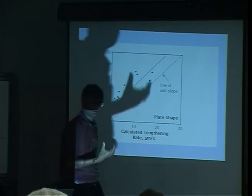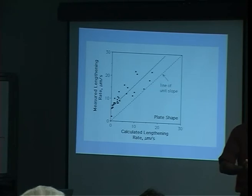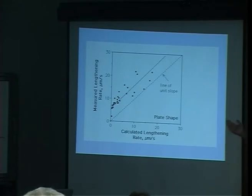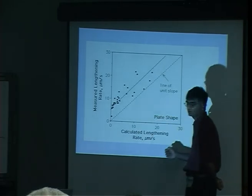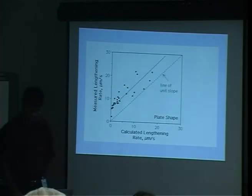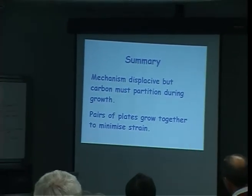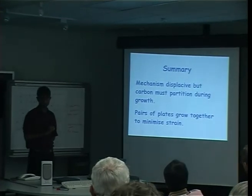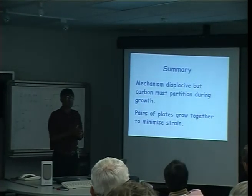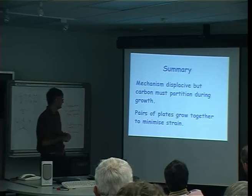Although Widmanstätten ferrite is a displacive transformation, carbon must diffuse — it's a thermodynamic necessity since it forms above T0. Therefore the plates will lengthen at a rate controlled by the diffusion of carbon, and indeed the measured lengthening rate matches the diffusion-controlled calculated rate. To summarize: Widmanstätten ferrite has a displacive mechanism, carbon partitions during growth, and pairs of plates grow together to cancel out the strain energy, allowing the transformation to happen at a low undercooling below the equilibrium temperature.